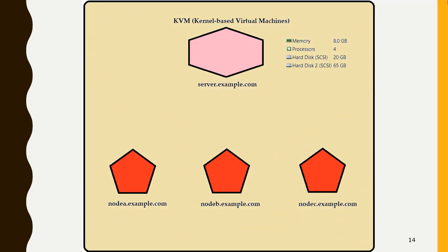The setup I have is a KVM-based machine — kernel-based virtual machine — that is server.example.com, which has 8 GB or more memory, 4 processors, and two hard disks: one 20 GB and another 65 GB. KVM is basically a full virtualization solution for Linux on x86 hardware with Intel VT or AMD virtualization technology.